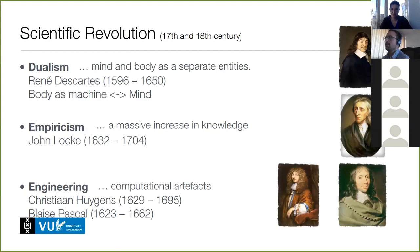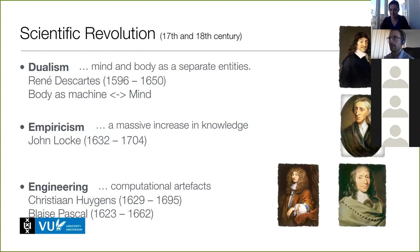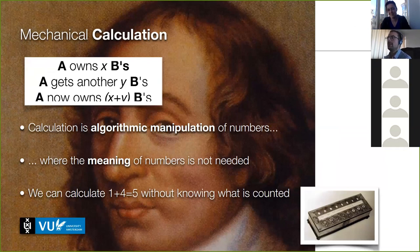Then we make a big leap to the 17th and 18th century. Ideas like dualism — separating the body and the mind — and empiricism in Britain provoked a massive increase in human knowledge about how the world works, but also in engineering. This led to precursors of computational artifacts: can we make machines that process symbols describing a categorization of the world and combine those symbols to produce reasoning?